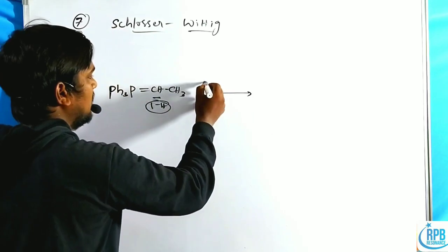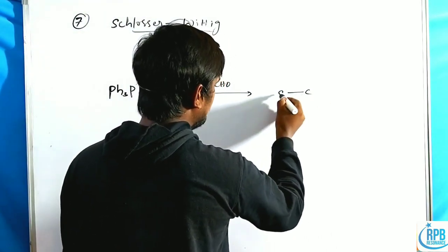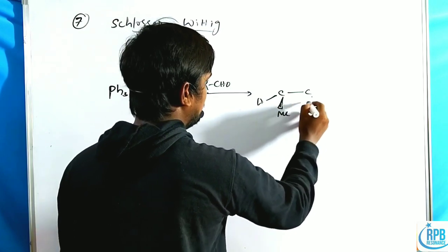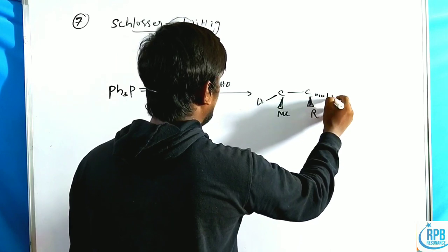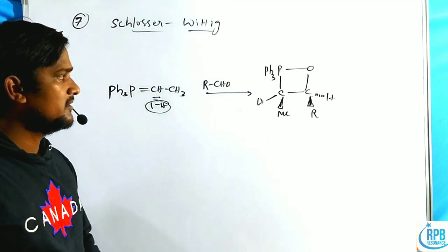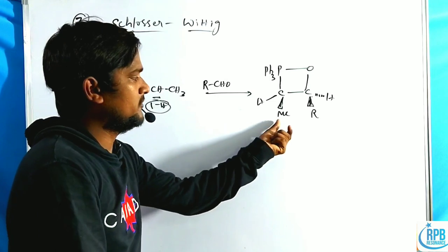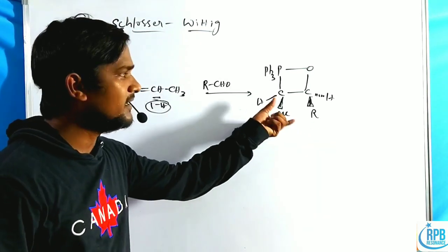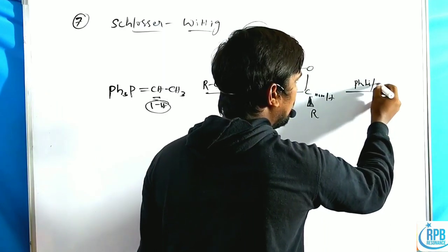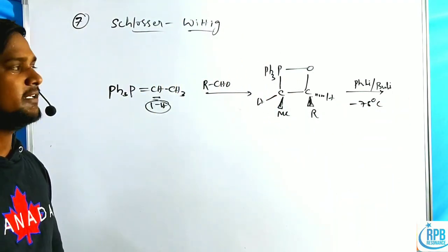Whenever this ylide is treated with aldehydes or organolithiums, it forms the oxaphosphetane intermediate. In this intermediate, methyl is above the plane, R is above the plane, with Ph3P and oxygen on the other side. When the phosphorus-oxygen bond flips, methyl and R groups come to the same plane. This oxaphosphetane intermediate is then treated with phenyllithium or tert-butyllithium — organolithium reagents — at minus 78 degrees centigrade.